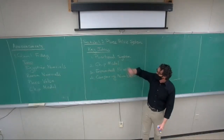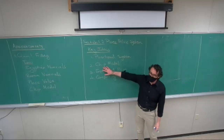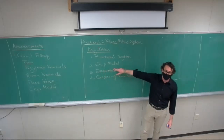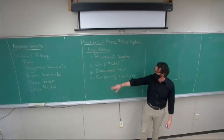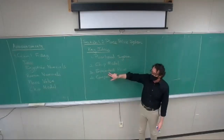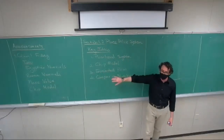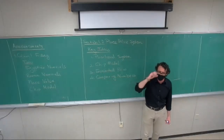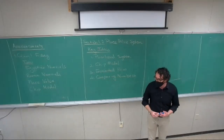So the positional system, using the chip model to represent things in the place value system, how to write things in expanded form, and comparing two numbers — seeing which one is the bigger of the two.